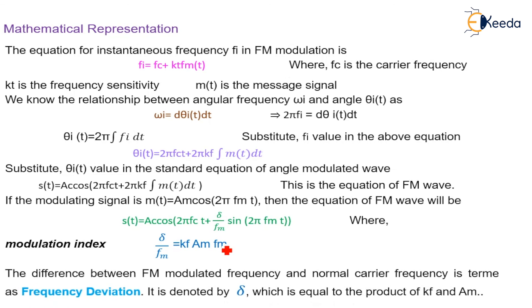The difference between FM modulated frequency and the normal carrier frequency is termed as the frequency deviation, which is indicated by delta, and the value of that is equal to the product of kf and Am. This was all about the FM modulation.